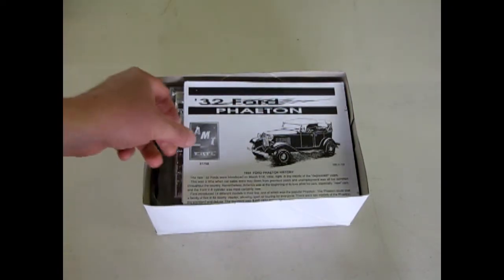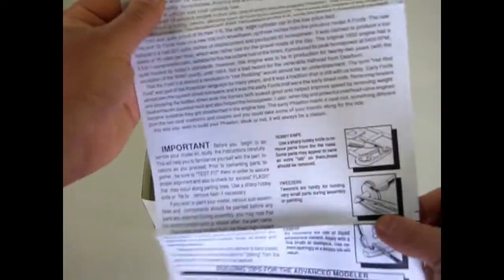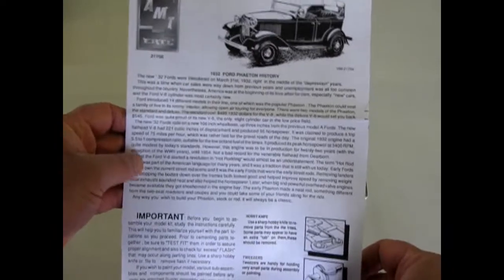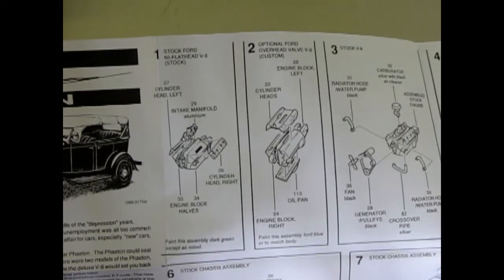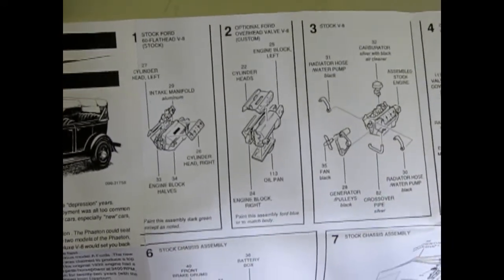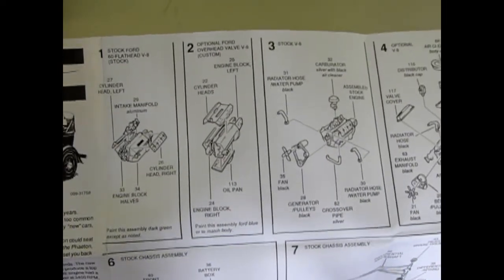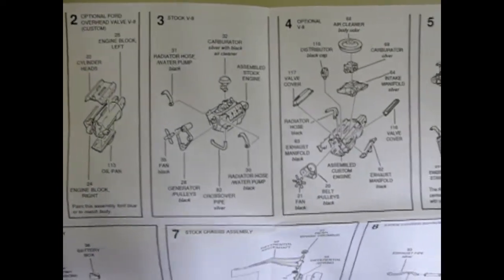So here we have our 32 Ford Phaeton Instructions looking as nice as can be. I always like the artwork in these kits. They give you a great big write-up right here so you get to know everything about the 32 Ford, including the Hot Rod History that came in after World War II. Because this kit is a 3-in-1 kit. And as you can see, you get the old Ford Flathead. This is the first year of the Ford Flathead, 1932. Revolutionized speed and it was a great car for gangsters because it had something that could outrun the police. If you read your history. And there it is going together.